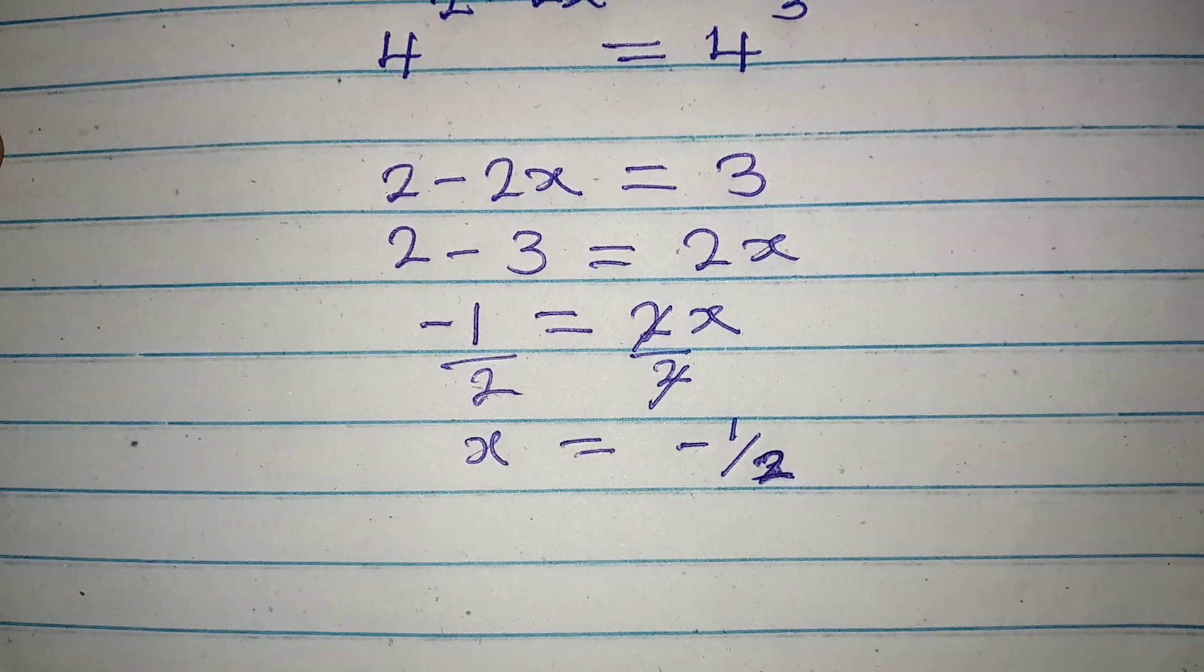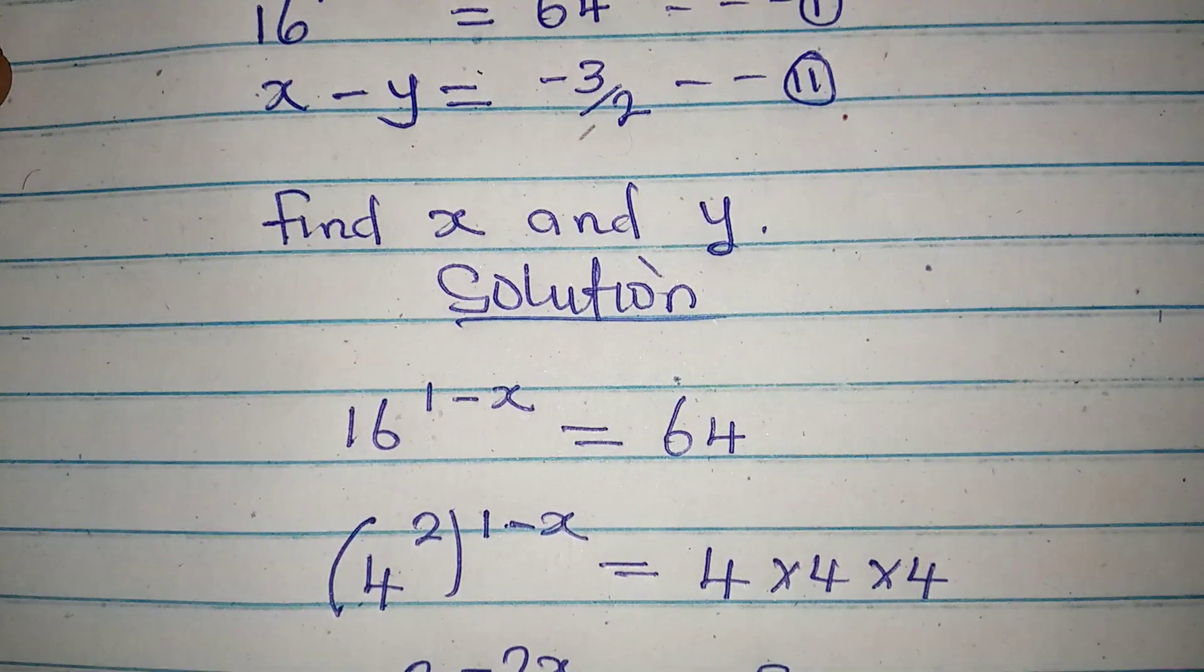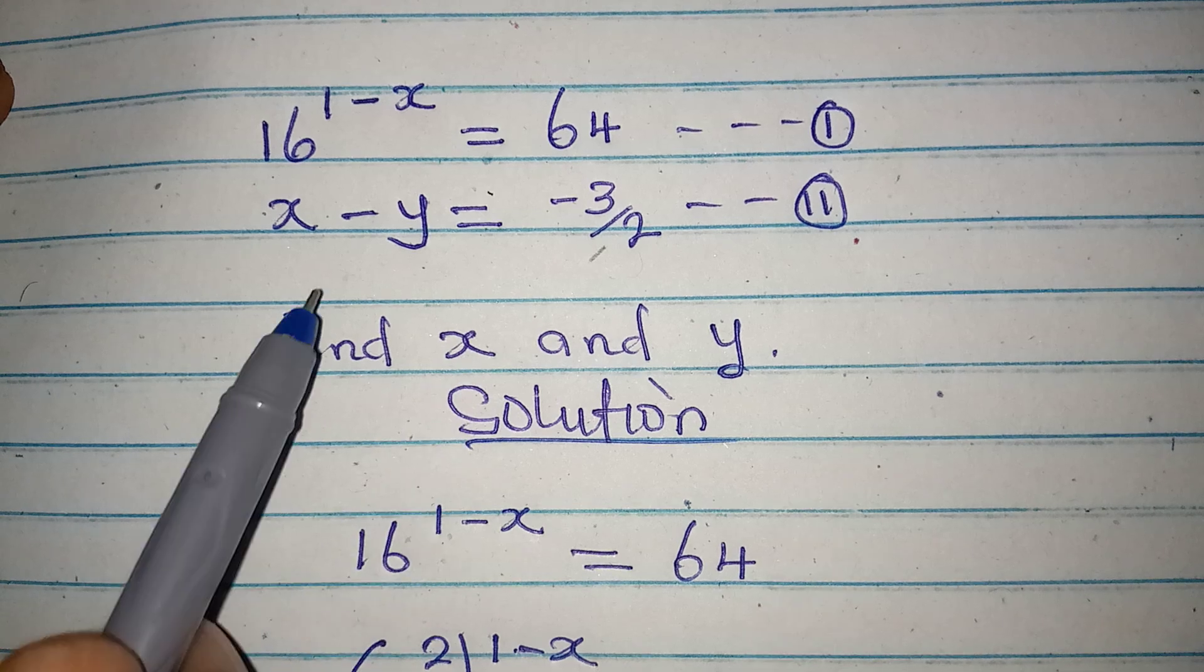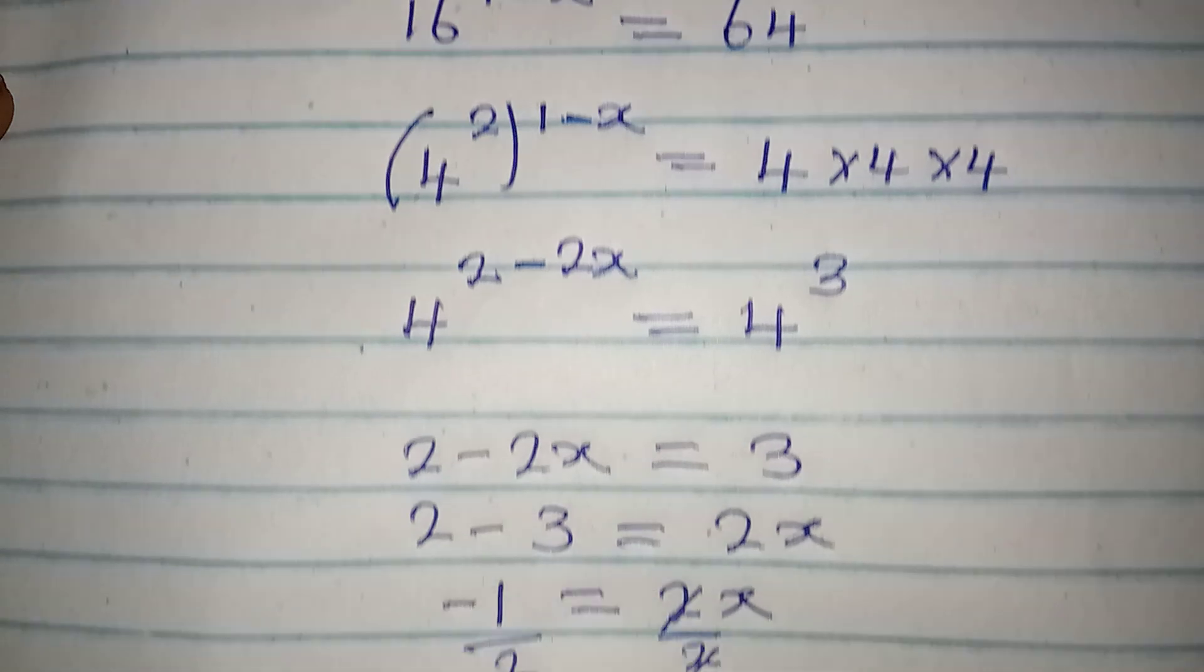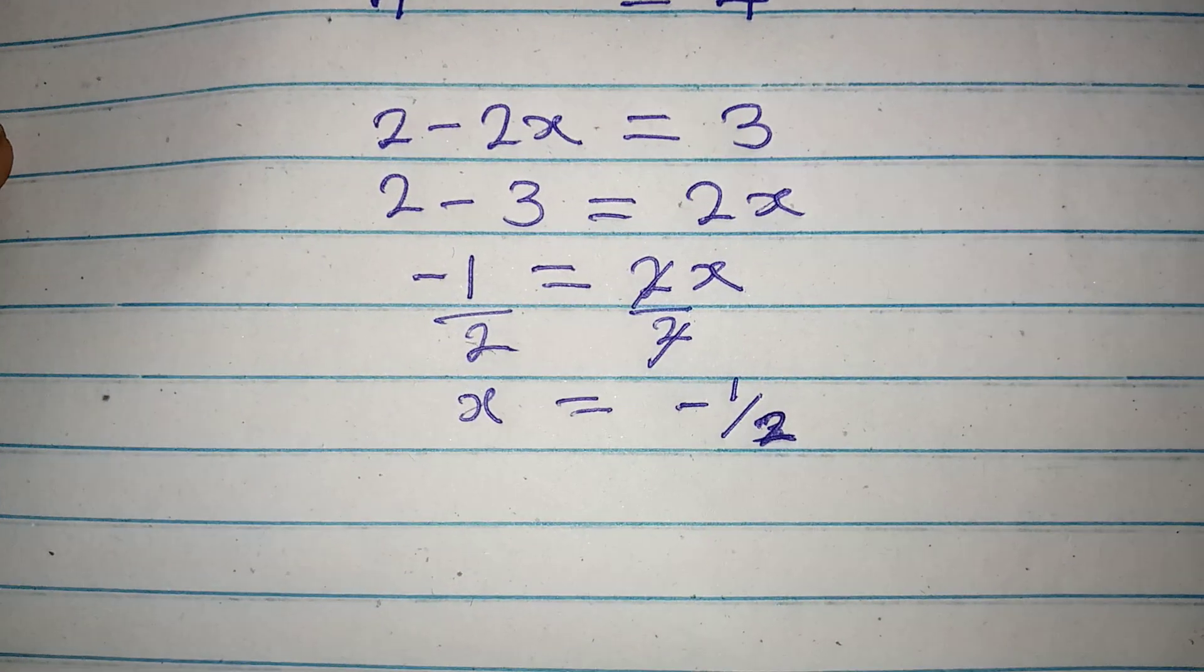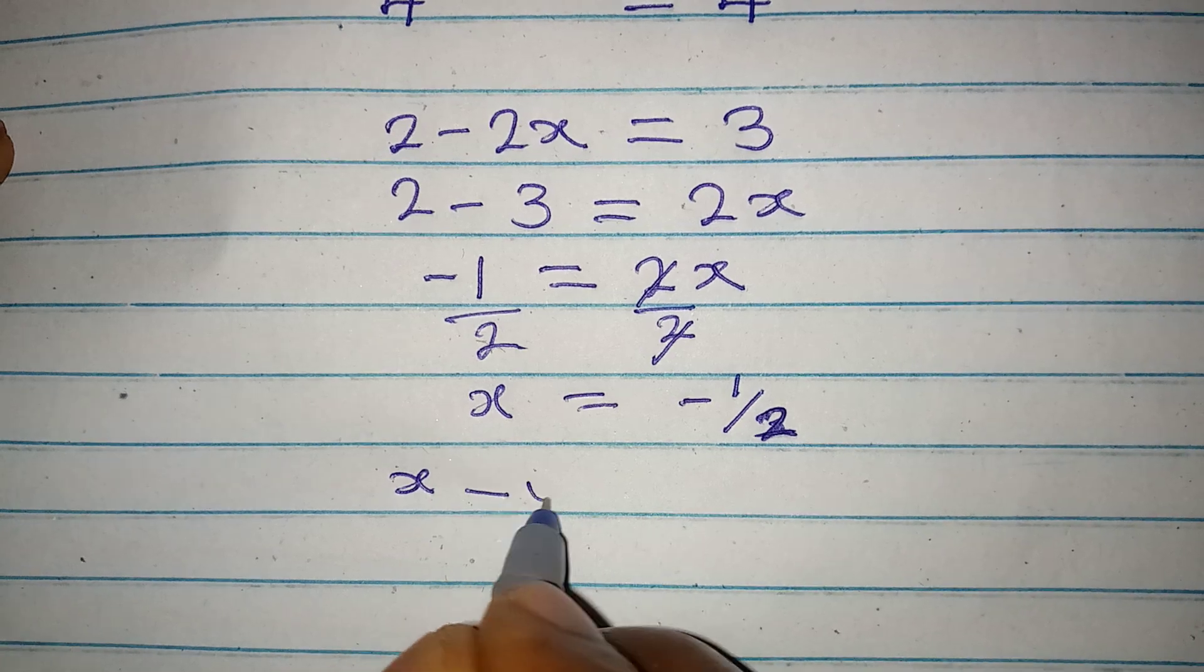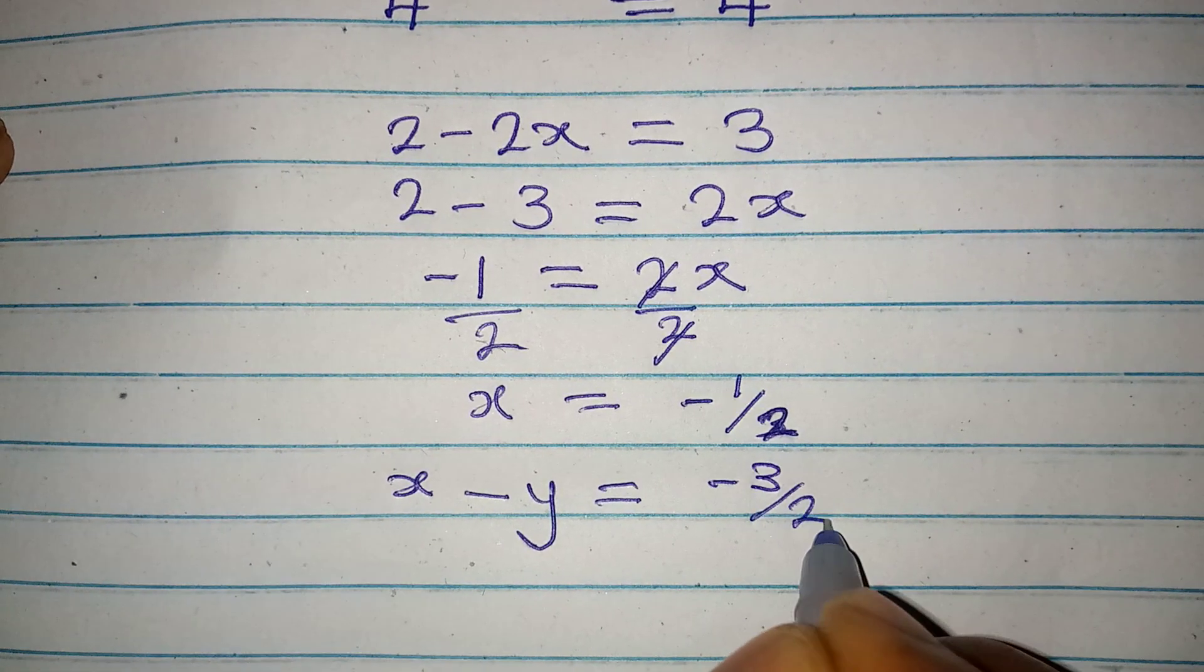But then we have to find x and y. As we can see in the question, we have to find the value of x and y. Now let's write our equation 2. Our equation 2 is x minus y equal to minus 3 over 2.